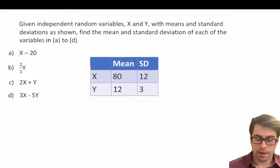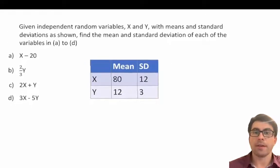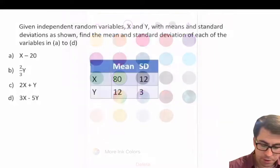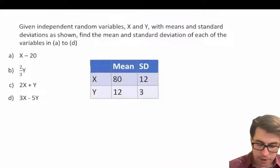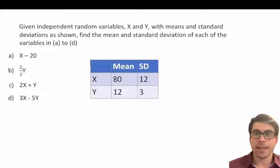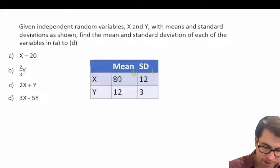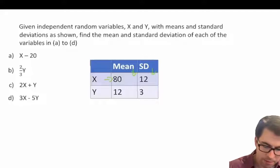Given independent random variables X and Y with means and standard deviations as shown below, find the mean and standard deviation of each of the variables in A through D. Here we have our means and here we have our standard deviations for our random variables X and Y.